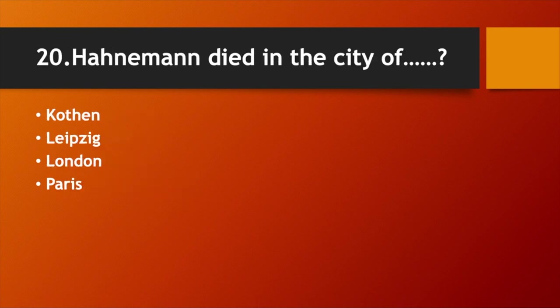Hahnemann died in the city of: Option A. Cothen. Option B. Leipzig. Option C. London. Option D. Paris. Answer: Option D. Paris.